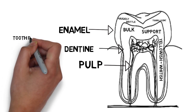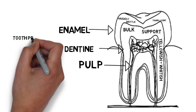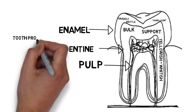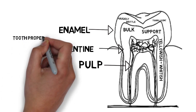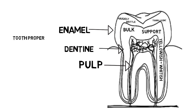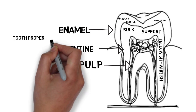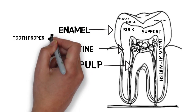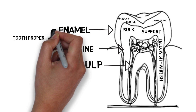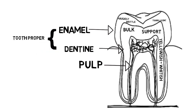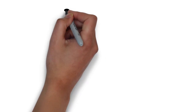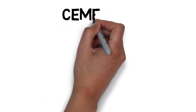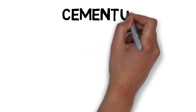There is a term known as the 'tooth proper.' In the tooth proper, we include two important structures: enamel and dentine — not the pulp. I'm mentioning this because it is a very important MCQ question. It is often asked: what is meant by the tooth proper, and which structures are included? The answer is enamel and dentine; the pulp is not included in the tooth proper.